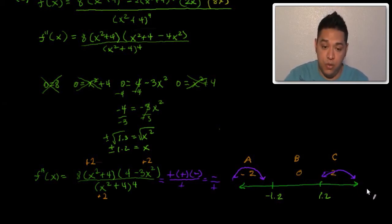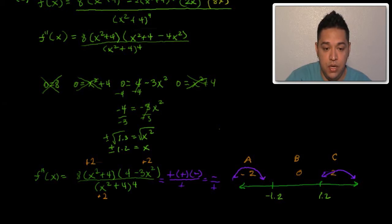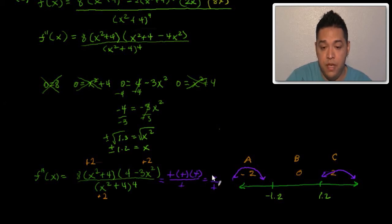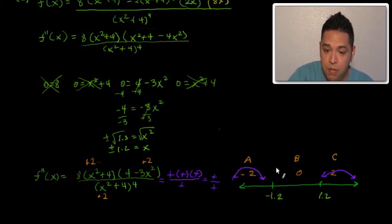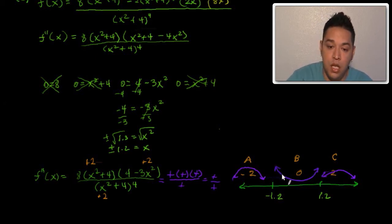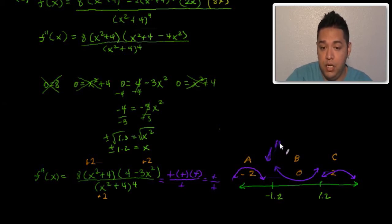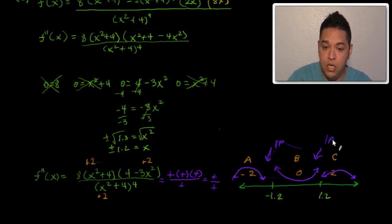Now let's test x = 0. Plugging zero into (x² + 4) gives positive 4 — positive. For (4 − 3x²): 4 minus 0 is positive. The denominator is positive. So positive times positive divided by positive is positive — we're concaving up from negative 1.2 to positive 1.2. There are inflection points at x = −1.2 and x = 1.2 because of the change in concavity.